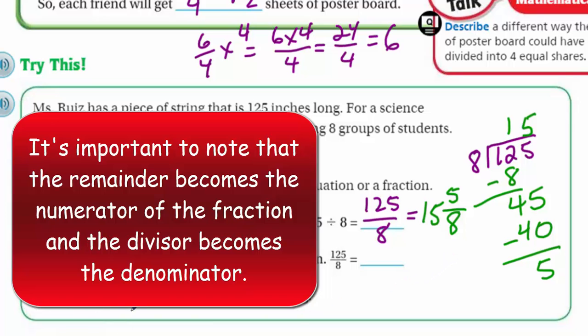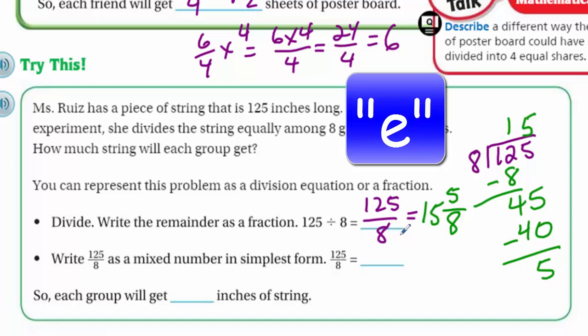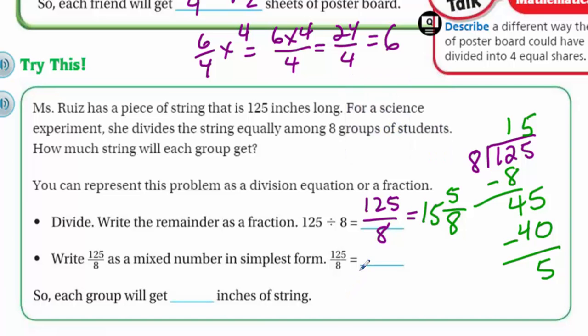So, this is how we would write this, then, as a mixed number. We have 15 as our whole number because we know the quotient was at least 15. But we also have, we had five left over. And then look at what our divisor was. We were looking for those size groups to see how many groups we could get. In this case, so five over eight. Then it says write 125 as a mixed number in simplest form. But we already did that. That's going to be the same answer. So, each group will get 15 and five eighths.